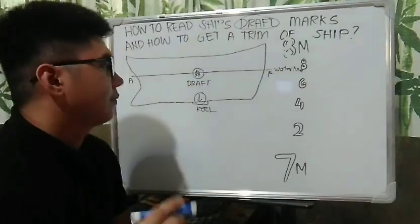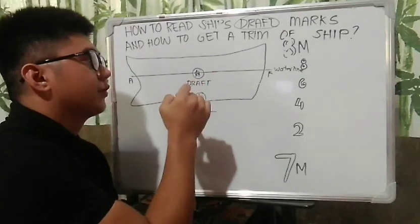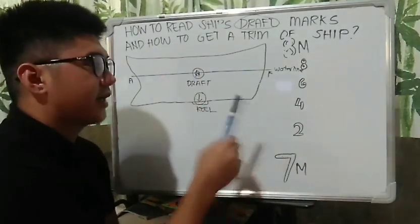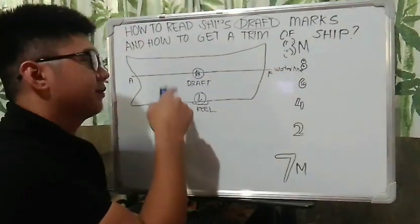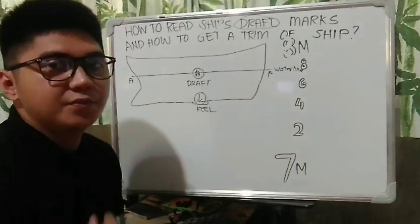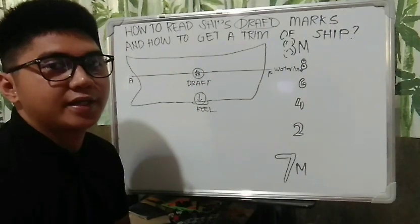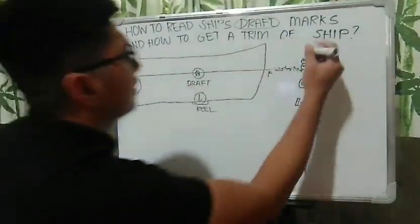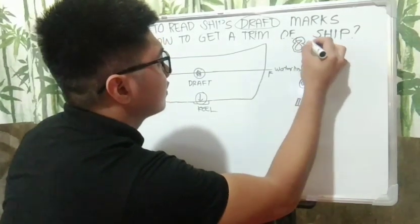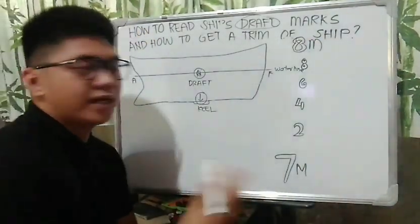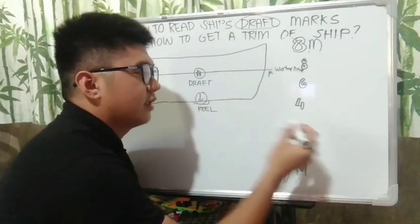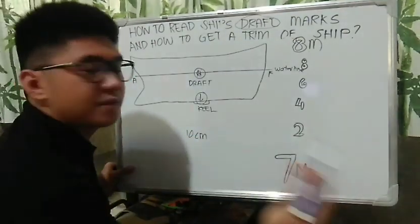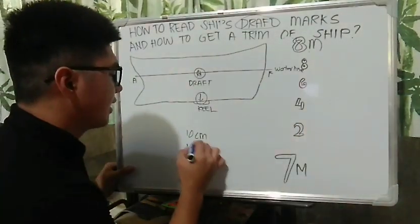Paano naman po tayo magbabasa ng ship's drop? Ilalabas lang natin para mas ma-gets ninyo kung paano nga ba kunin yung ship's draft mark and kung paano nga ba siya basahin. Tandaan na natin na yung bawat number na to is 10 centimeter po ang bawat isa. And then, kung mapapansin ninyo, may mga spaces dito — 10 centimeter din po yan.